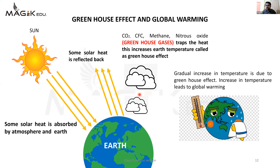Greenhouse effect ke wajah se global warming hota hai. Gradual increase in temperature is due to the greenhouse effect. Ab jo heat trap hui hai, uske wajah se temperature badhne lagta hai - dheere dheere temperature badhta jaata hai jisse global warming hoti hai. Global warming ka matlab - global yani hamaari Earth, globe aur warming yani garam hona. Ab temperature badhega to Earth to garam hoti hi jaayegi - usi ko hum English mein global warming kehte hain.